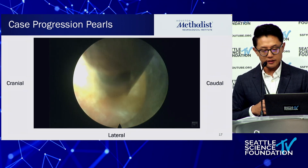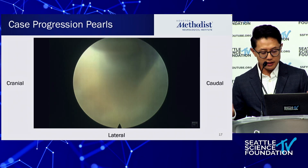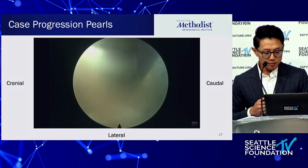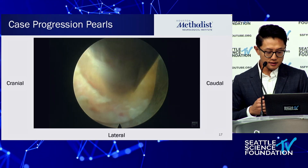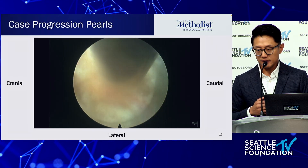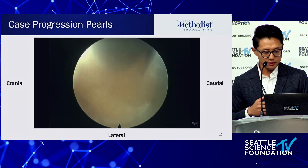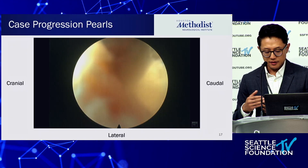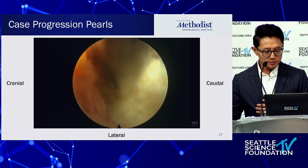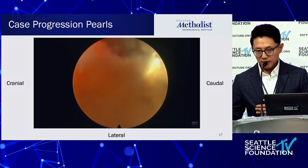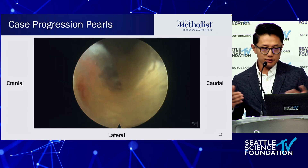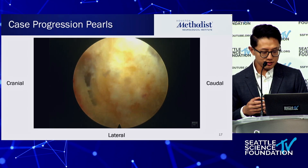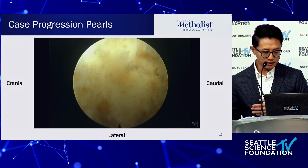Once you get to the laminar edge, continue to expand your interlaminar window. Once you expand the interlaminar window and identify that rostral vertebral lamina drop-off, you can find your ligamentum flavum, expose it, and drill as necessary. In this case I decided to drill, especially because part of the disc herniation was lateral into the proximal foramen.